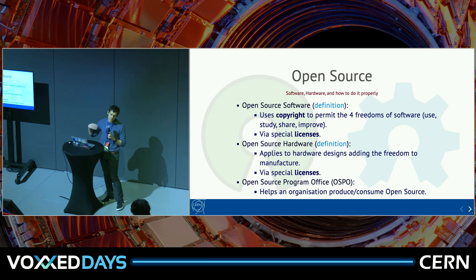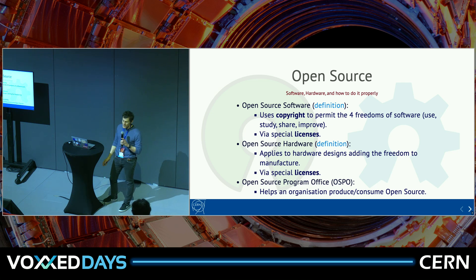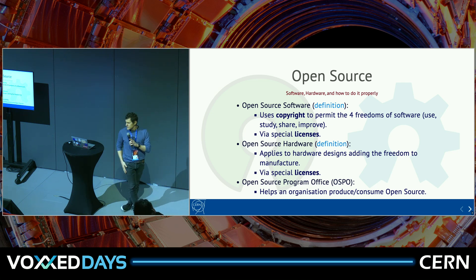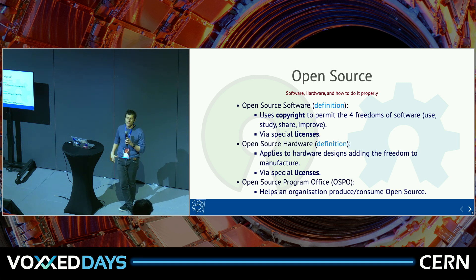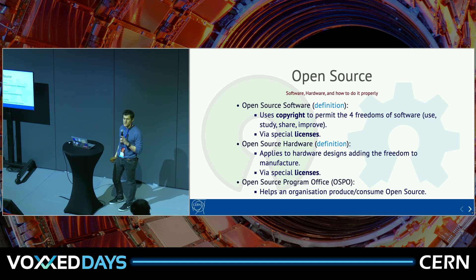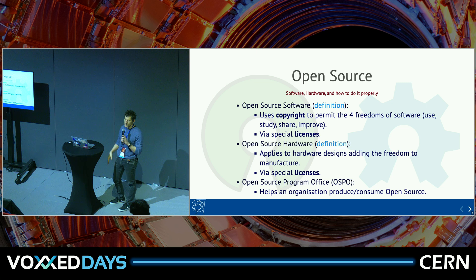So what is open source? It's a special kind of software that uses copyright to permit what we call the four freedoms of software: the freedom to use, share, study, and improve. This is done via special licenses. There's also open source hardware, which adds another freedom — the freedom to manufacture the design.